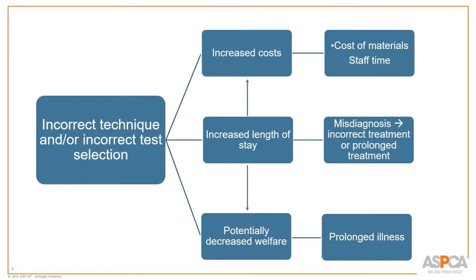You come back in a hurry trying to get 10 things done at once — because all shelters are so well staffed. In your rush, instead of grabbing the canine heartworm test, you grab a feline combo test and start running it. You realize halfway through after you've put the sample on that you picked the wrong test.